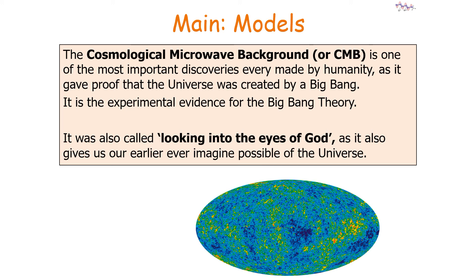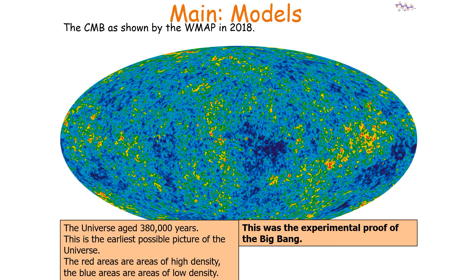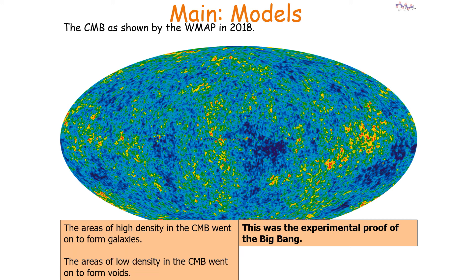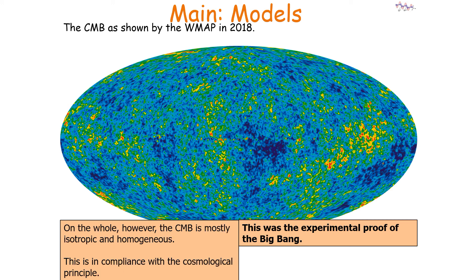Here is the cosmic microwave background as shown by a satellite in 2018 — the earliest possible picture of our universe. According to traditional physics, the CMB should be constant; however, quantum mechanics causes fluctuations in the CMB when our universe was very small. Areas of high density in the CMB went on to form galaxies, and areas of low density went on to form voids. On the whole, the CMB is mostly isotropic and homogenous, which is in compliance with our cosmological principle.